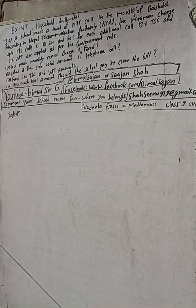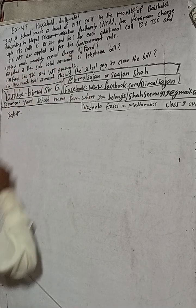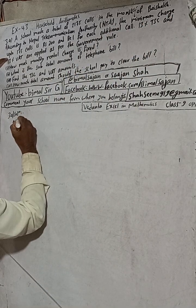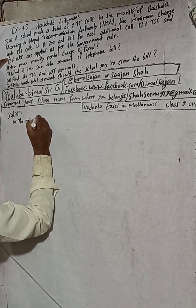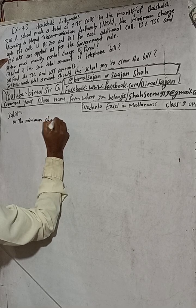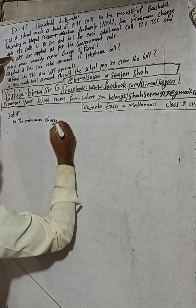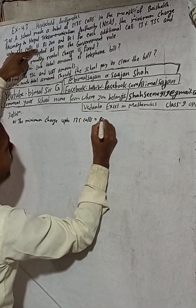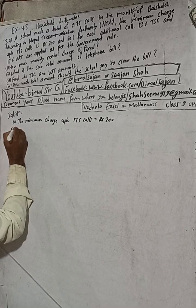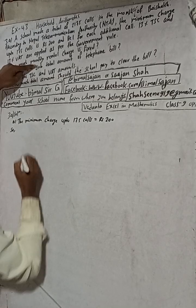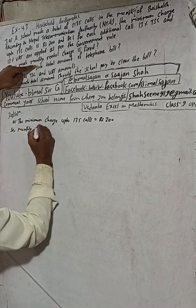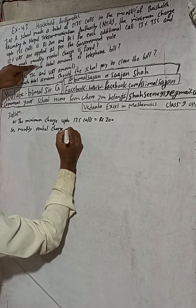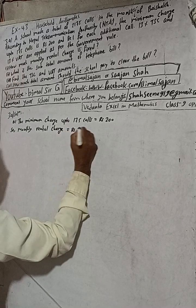Question number one: how much is the monthly rental charge fixed? From the question, the minimum charge up to 175 calls is equal to Rs. 200. So the monthly rental charge is equal to Rs. 200. This is the answer to number one.